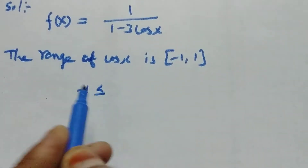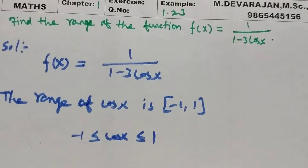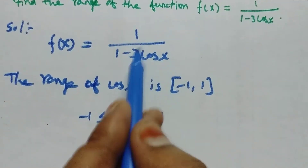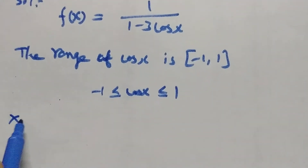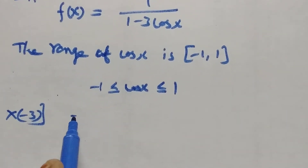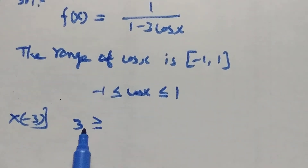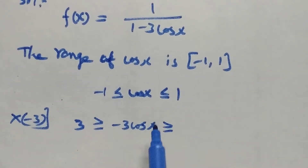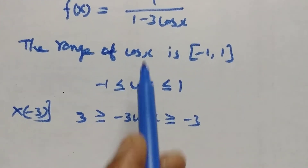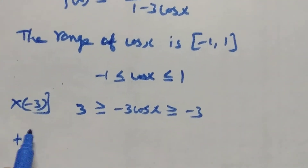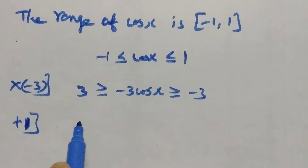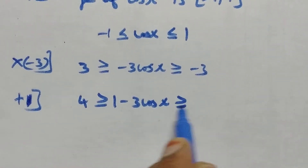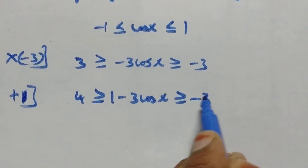So that is [-1, 1]. Multiplying by -3: the expression -3 cos x lies in [-3, 3] (reversed). Then adding 1 to both sides: 1 - 3 cos x lies between -2 and 4, giving -2 ≤ 1 - 3 cos x ≤ 4.